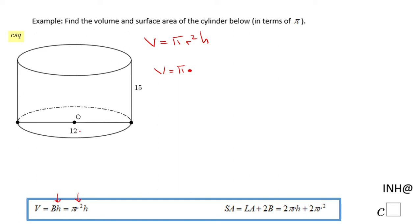In this case, let's take a look. We have pi, but if we look at this picture, this 12 is not the radius, it's the diameter. The radius will be half of this diameter, so 12 divided by 2, that will be 6.